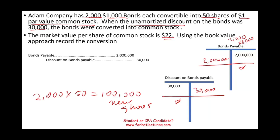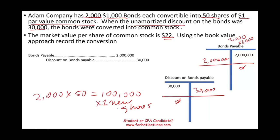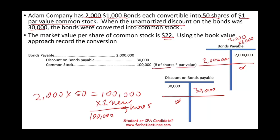So the bonds are gone. Next, I need to issue the stocks. The number of shares times the par value of a dollar means I'm going to credit common stock for $100,000. What's left is always paid-in capital in excess of par — common stock — and that number is a plug-in. It's the last number I have to book the entry for: $1,870,000.